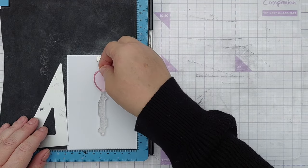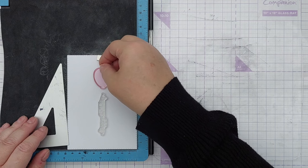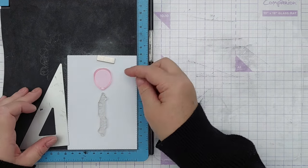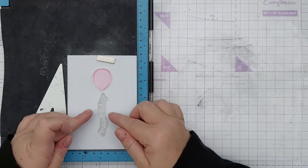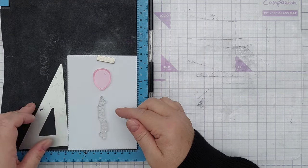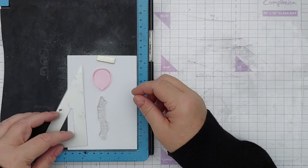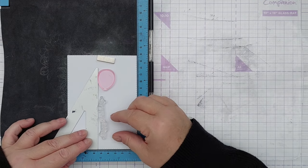Right, back to today's card. I'm working on a stitched rectangle panel of smooth white cardstock and I've got a photopolymer balloon stamp and a photopolymer happy birthday scripty sentiment stamp.